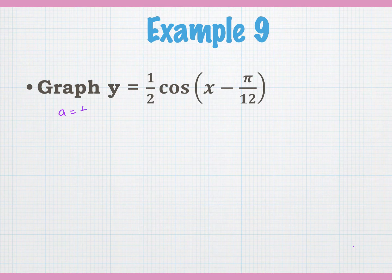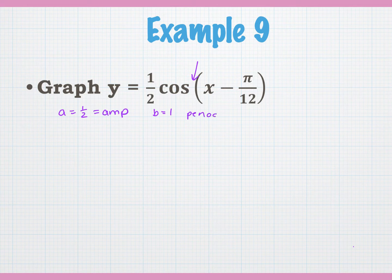One-half. And the absolute value of that is our amplitude, so our amplitude is one-half. What's the B? One, because it's what's in between the cosine and the X, which means our period is two pi over one, which is two pi.